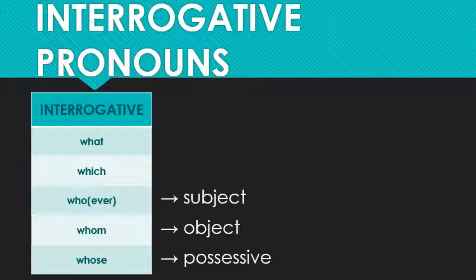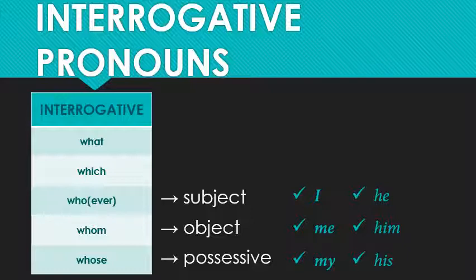This is the same exact thing that happens with the personal pronouns: I, me, my — he, him, his. I and he are both subjects, so 'I like ice cream.' But the object ice cream does not like me. Get away from my ice cream! You do the same thing with who.